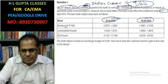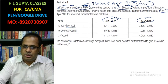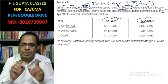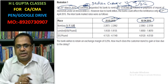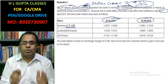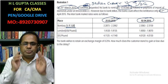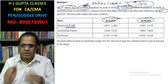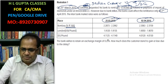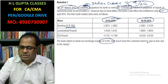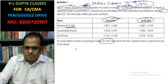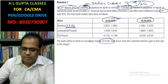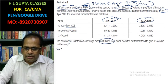Dollar per 100 Rupees is given in the question — not for a single Rupee or single dollar. You need to calculate Rupees per dollar from this. Also, the bank wishes to retain an exchange margin of 0.025%. We need to find how much the customer stands to gain or lose due to the delay.